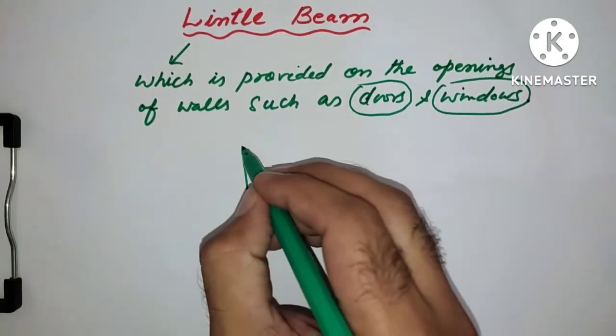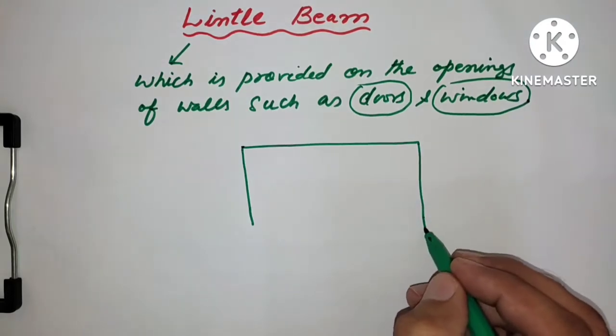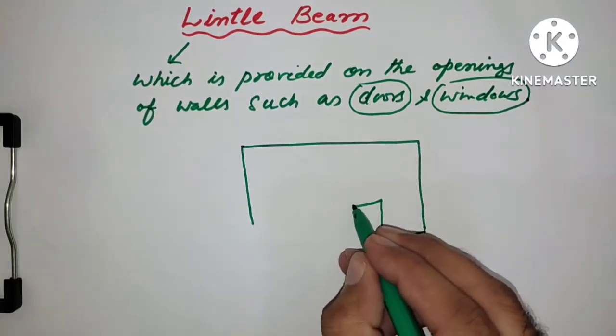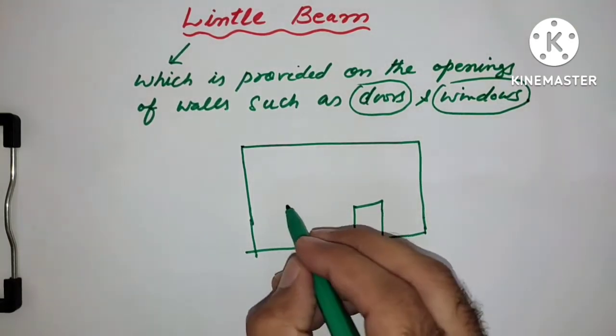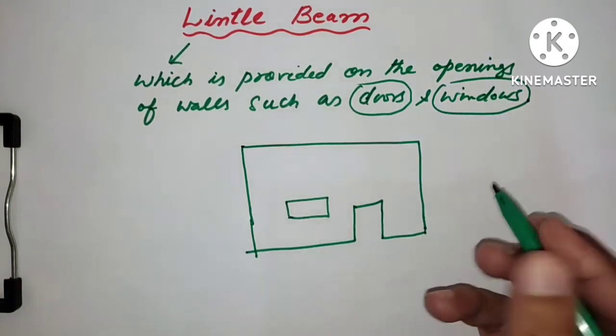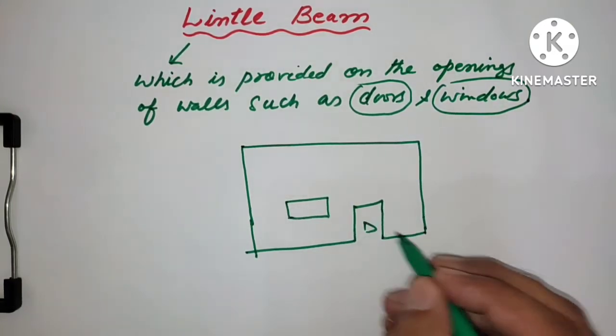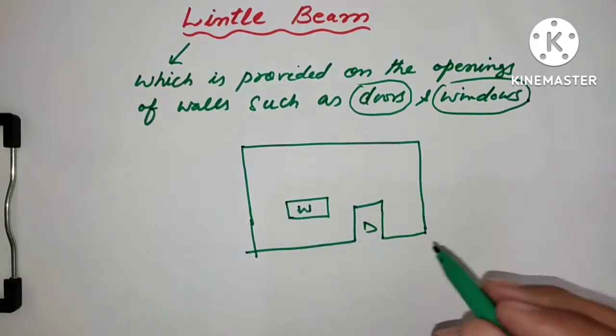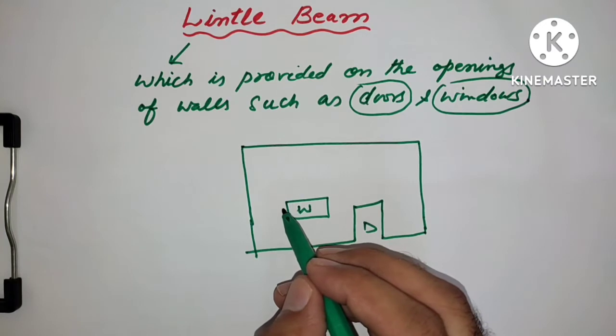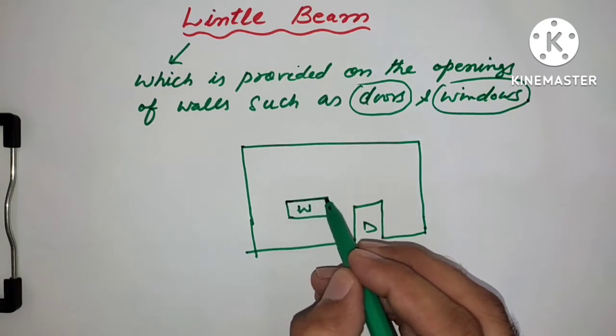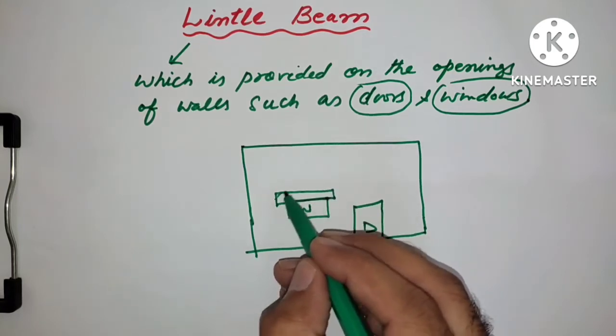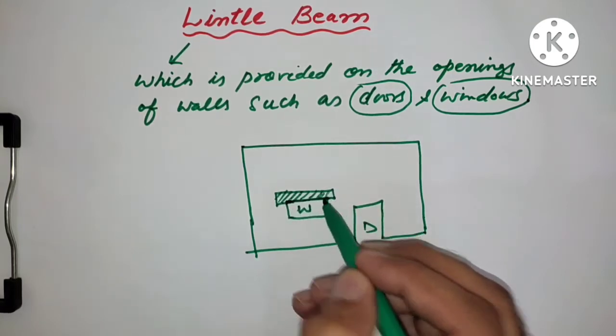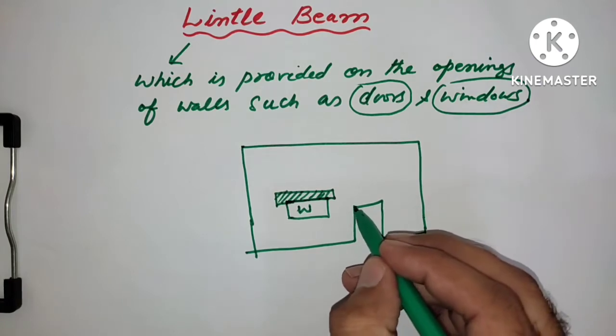Suppose this is one room, this is door, this is window. Now we will provide lintel above the window and doors. This is lintel above window, and we will provide lintel like this above the window opening and also on the door opening.